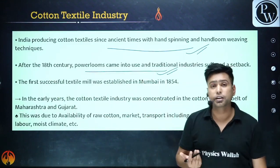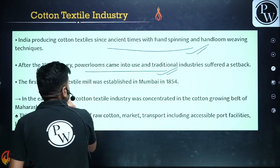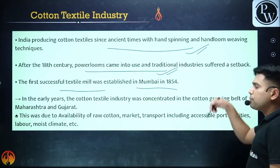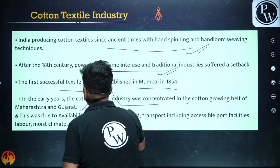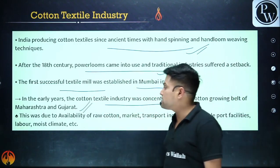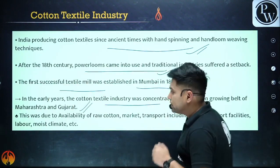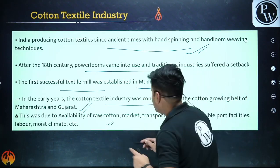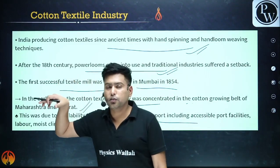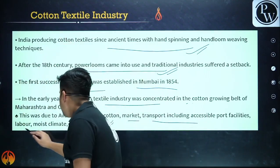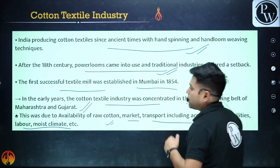In the earlier years, the cotton textile industry was concentrated in the cotton-growing regions of Maharashtra and Gujarat. The reasons: availability of raw cotton, proximity to the market, accessible port facilities for overseas trade, cheap labor, and moist climate favorable for cotton growth. These positive factors aided the growth of cotton textiles in India.